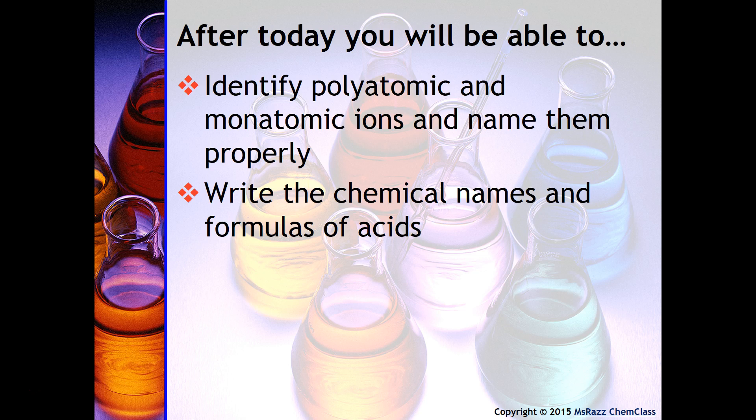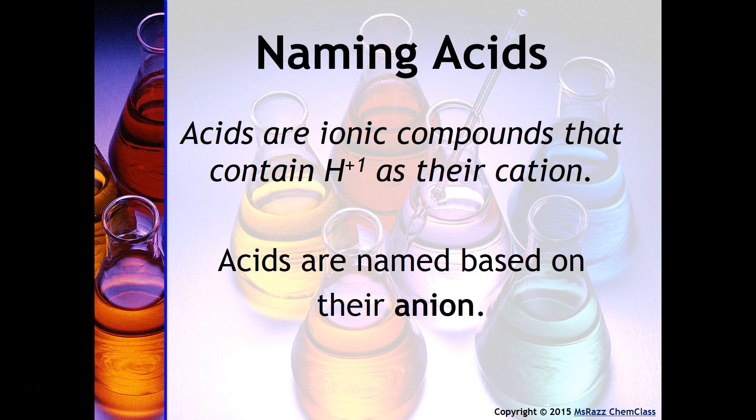You can identify an acid because an acid is an ionic compound that contains H⁺¹ as its cation. However, acids are named based on their anion.